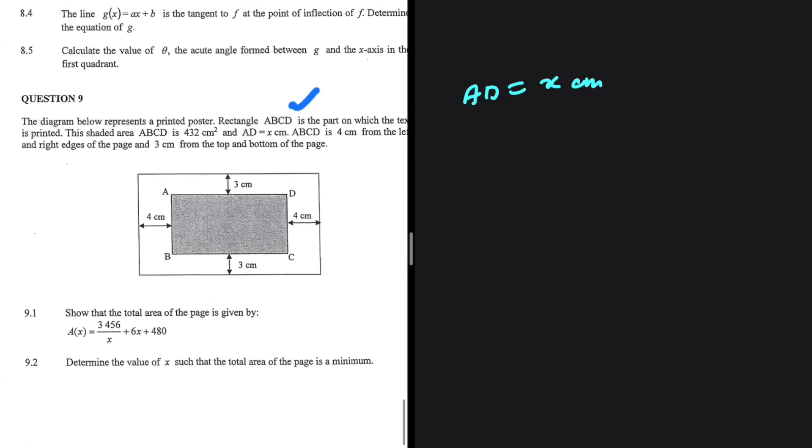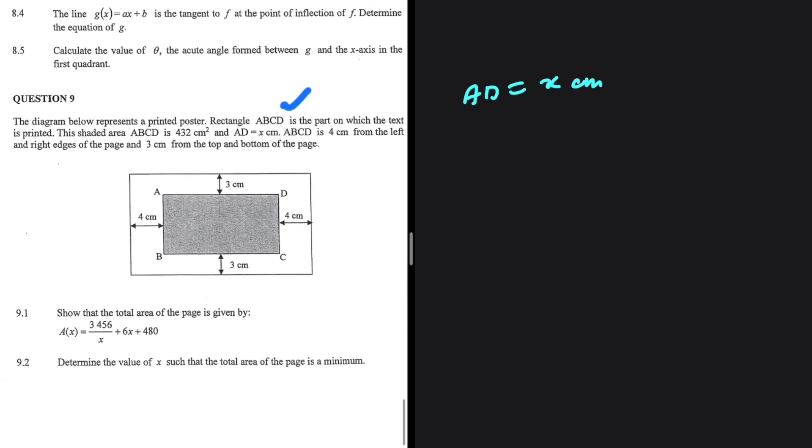ABCD is 4 centimeters from the left and right edges of the page and 3 centimeters from the top and bottom of the page.